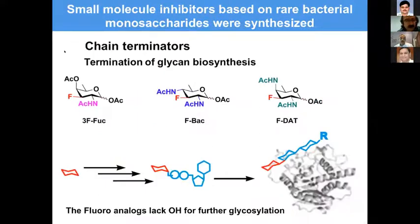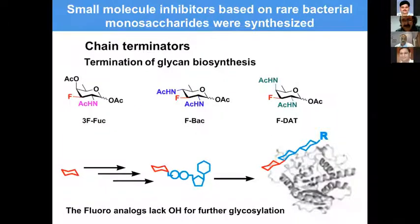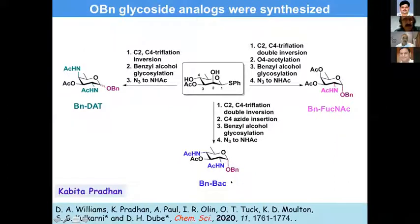The benzyl glycosides were made from the rare sugars by Kavita using glycosylation with benzyl alcohol followed by deprotection, whereas the fluoro-glycans were more difficult to synthesize, and Ankita and Kavita did a remarkable job. This involved sequential SN2 inversions: first invert at the C2 position, then C3, then C4, then double inversion to get all these analogs.